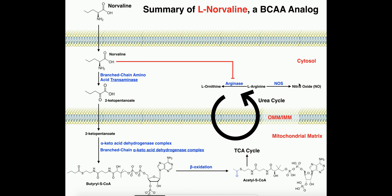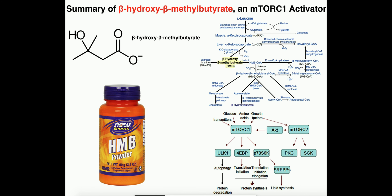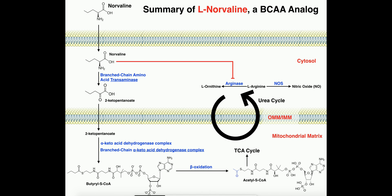Hopefully this gave you some good information on norvaline. Please make sure to like this video and subscribe to the channel. In the next video, we're going to discuss HMB powder — beta-hydroxy-beta-methylbutyrate — another ergogenic aid that has evidence of being beneficial to take before and after exercise. We'll talk about the functions of HMB in the next video. Thank you very much.